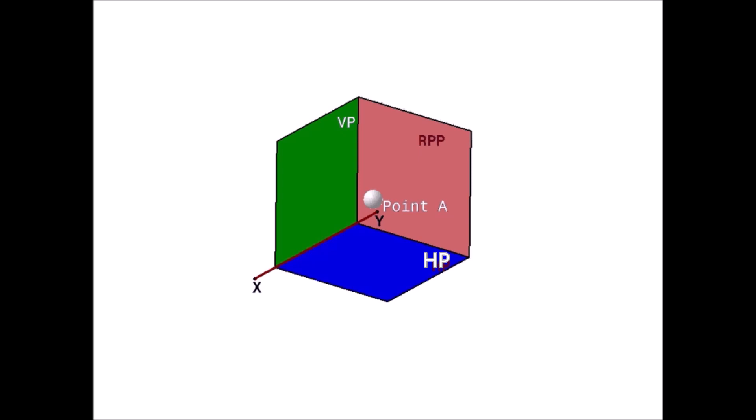The line of intersection of the profile plane with the vertical plane VP is denoted as X1Y1 line, sometimes called the X'Y' line.